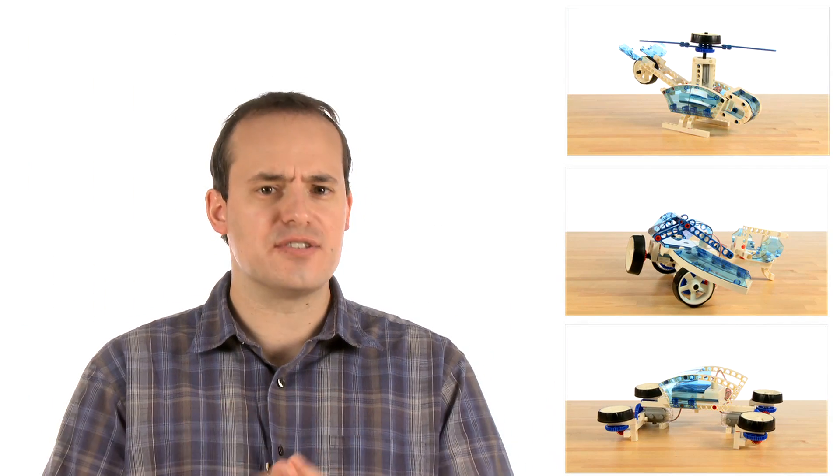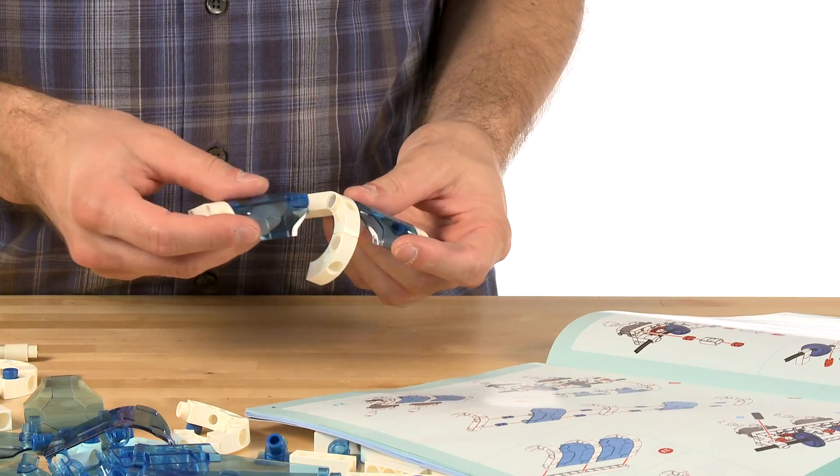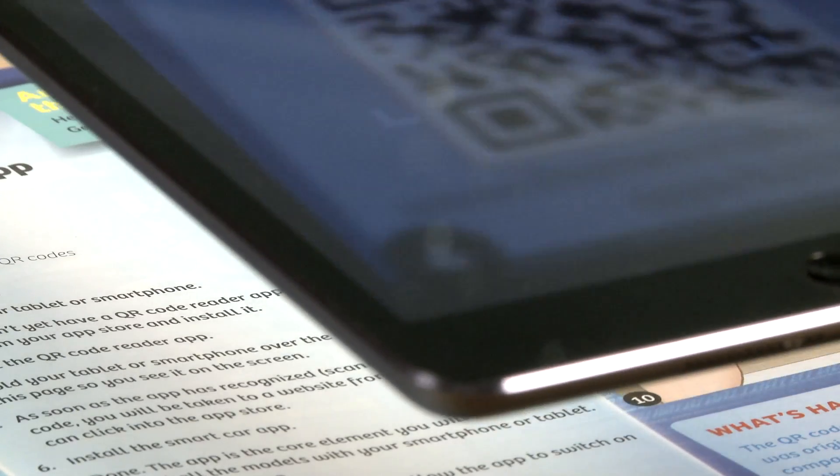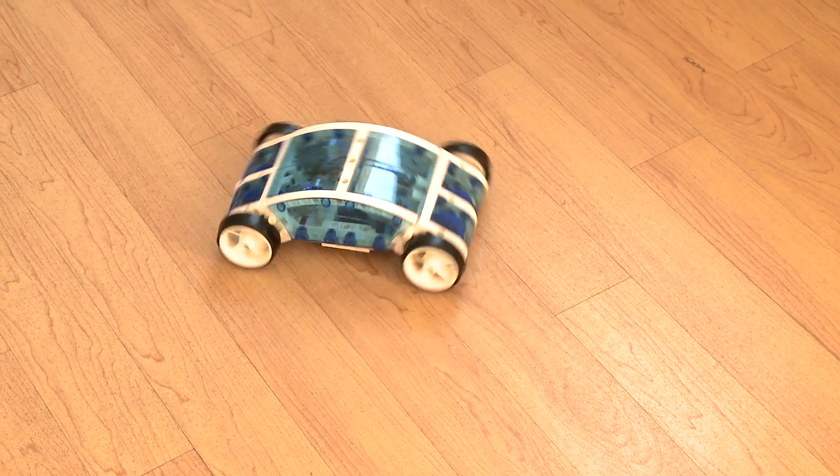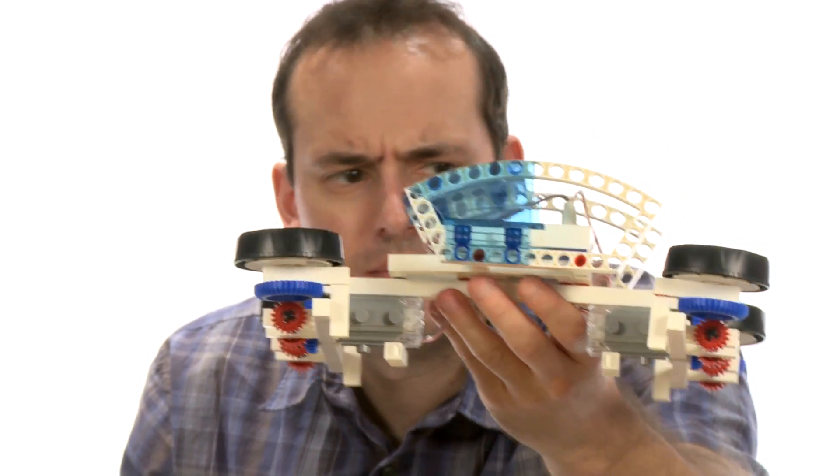Well, they don't actually fly, but rather work as true programmable concept models. Simply build the model of your choice by referring to the included color experiment manual, scan the QR code, download the app, and before you know it, you could be doing donuts in your room or learning about how a flying car could become a reality in the future.